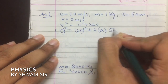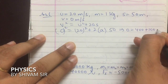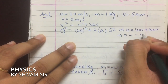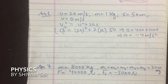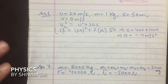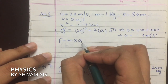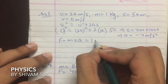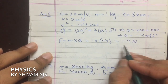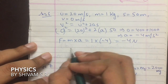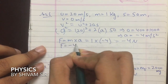From Newton's second law, F = ma = 1 × (-4) = -4 N. The force is of negative sign because this is frictional force acting opposite to motion. The frictional force between the stone and the ice is F = -4 newton.